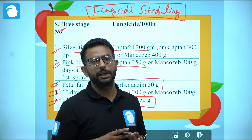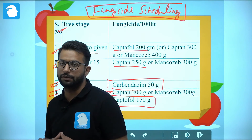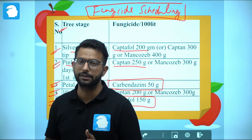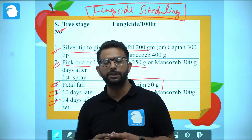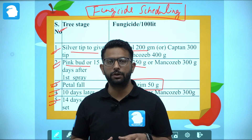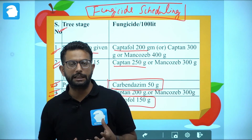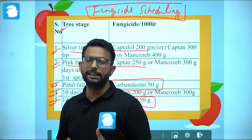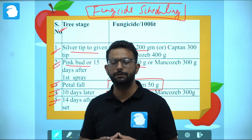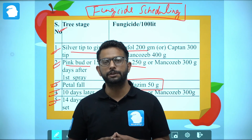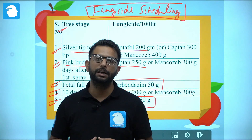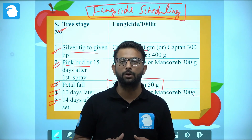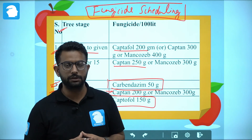In summary, for apple scab management we do fungicide scheduling and use resistant cultivars. Apple scab is caused by Venturia inaequalis, which causes blisters and scabs on fruits and leaves, leading to defoliation over two to three years, weakening the tree and increasing susceptibility to insect pests and other diseases. In the disease cycle, the fungus overwinters in fallen leaves; under favorable conditions, ascospores spread via wind causing scabs on newer leaves, while older leaves are more resistant.